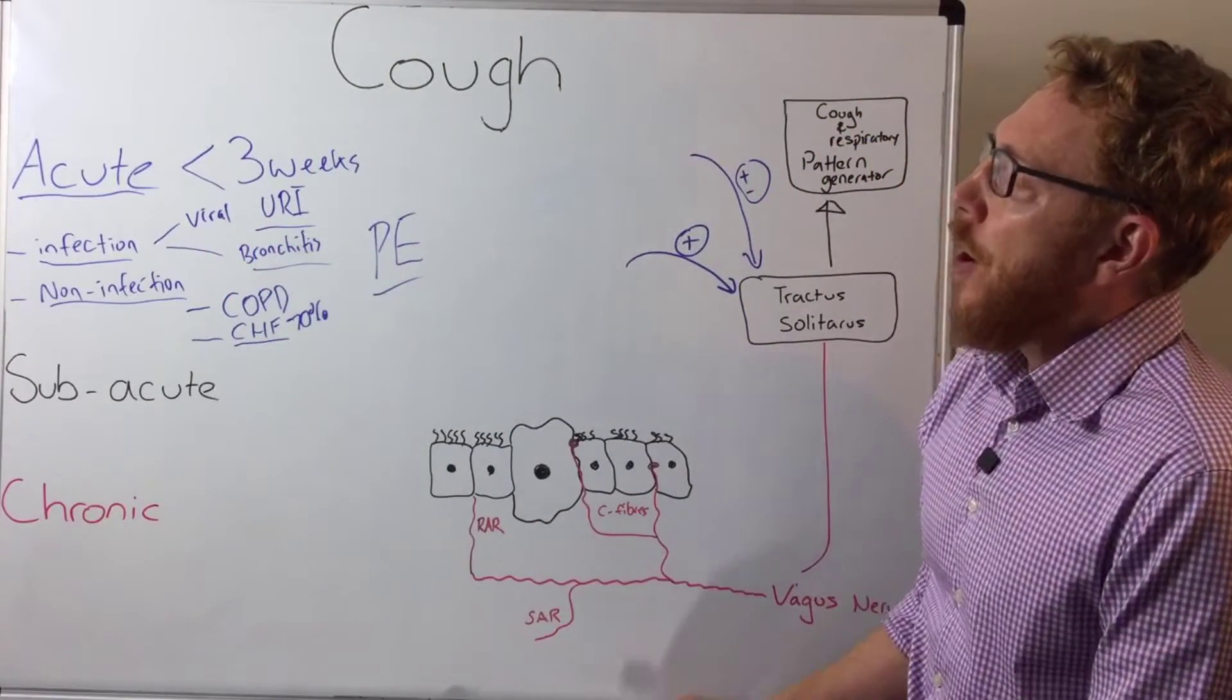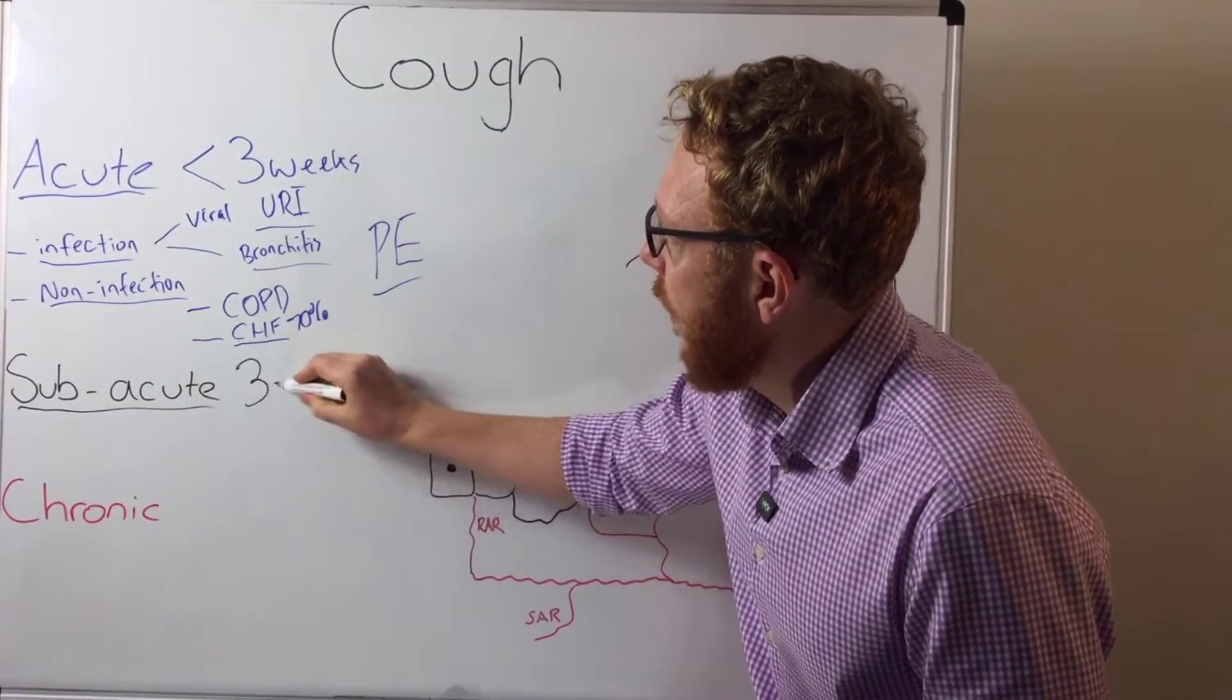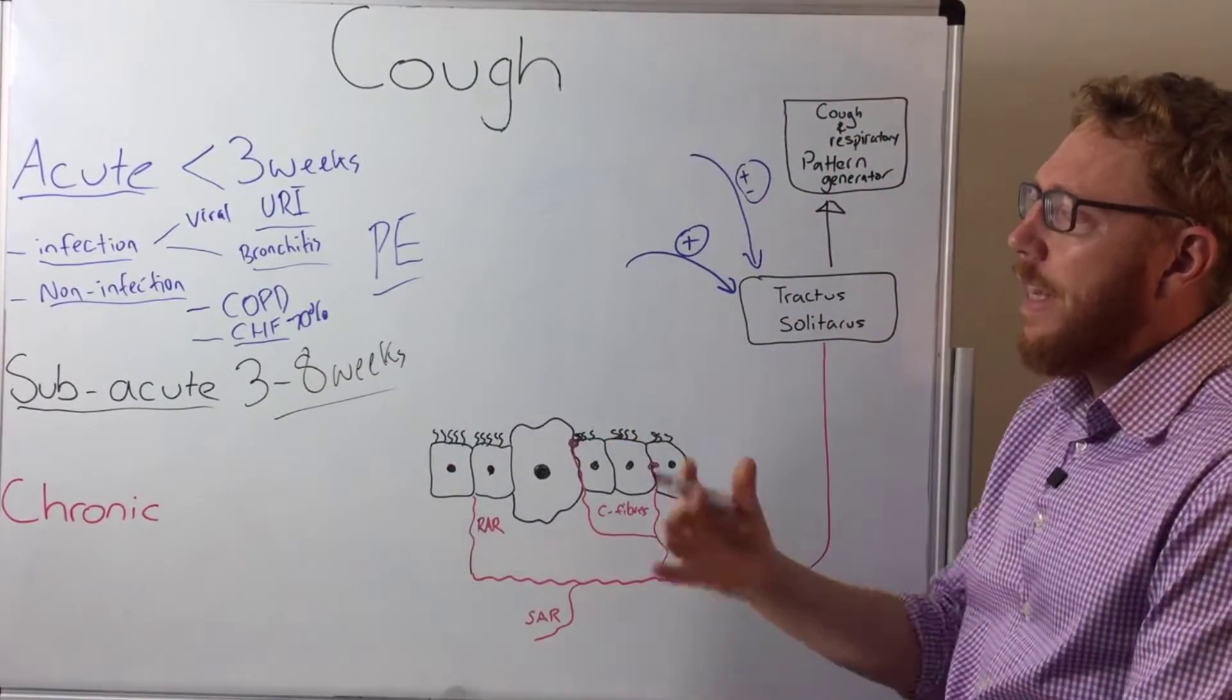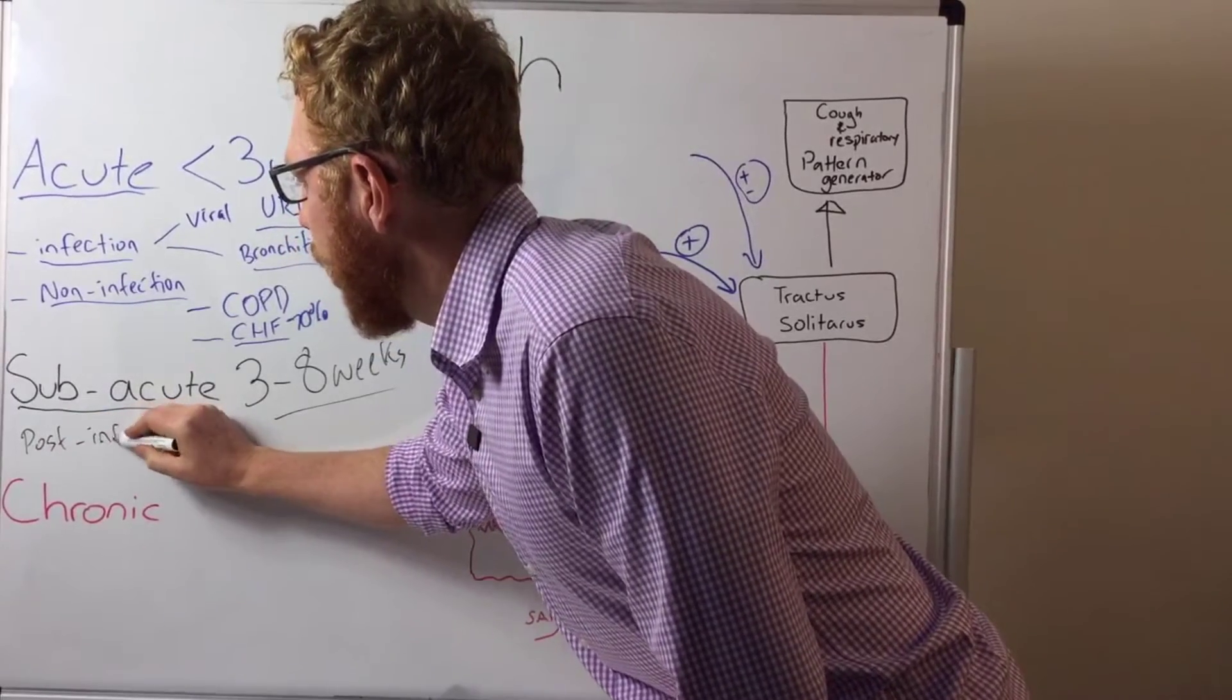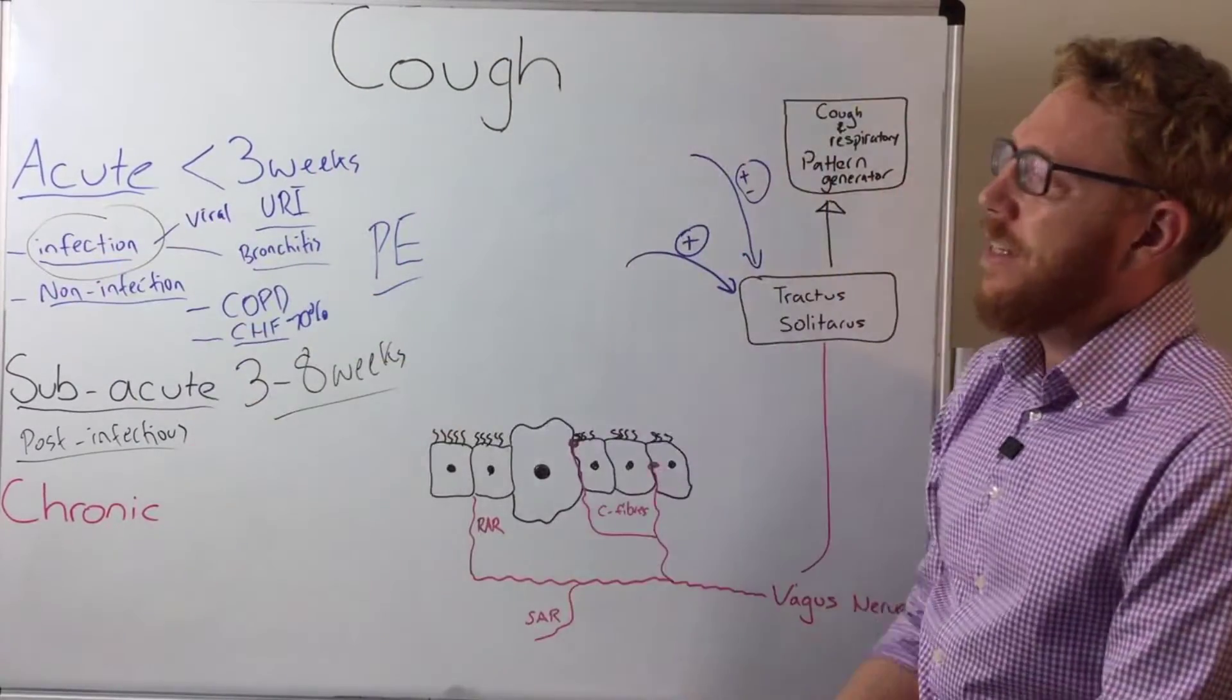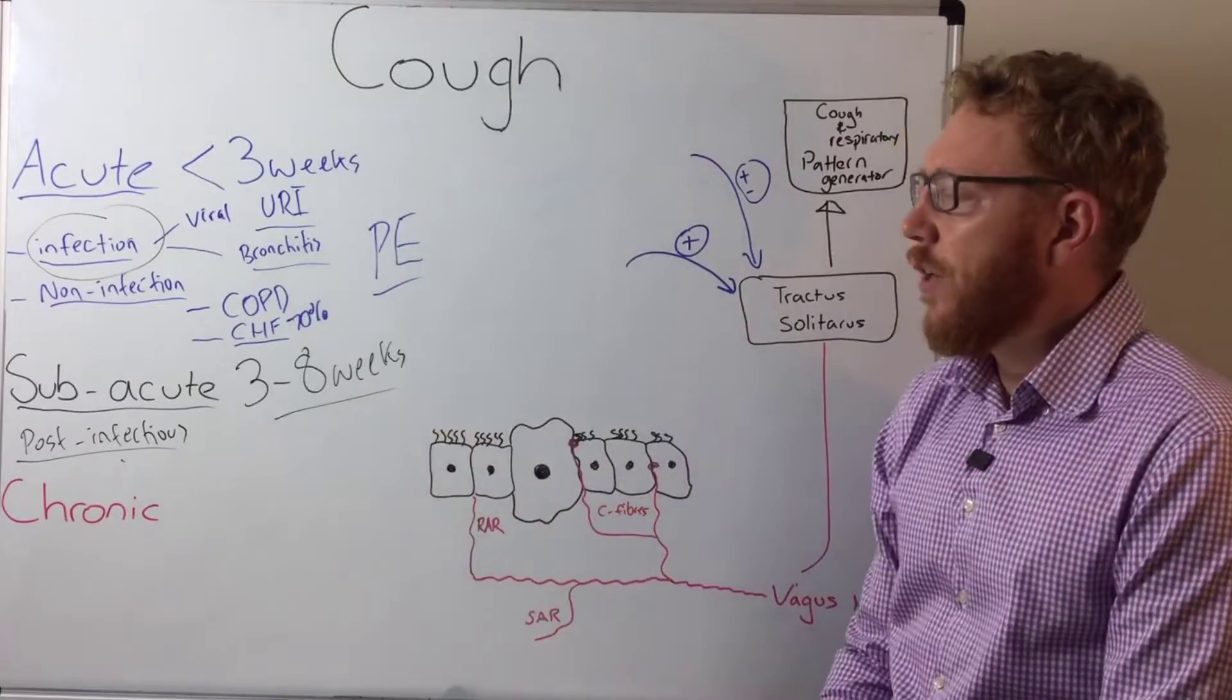So there we go, that's the acute cough less than three weeks. Now we move to the subacute, so this is essentially a duration of three to eight weeks. Now by far the most common cause of a subacute cough is post-infectious. So really what's happening here, everything we saw here is still lingering around which leads to this ongoing cough.